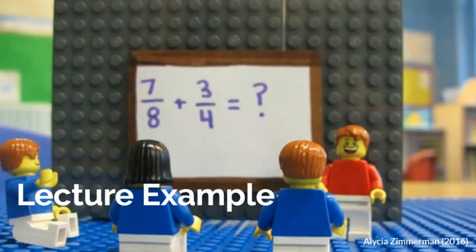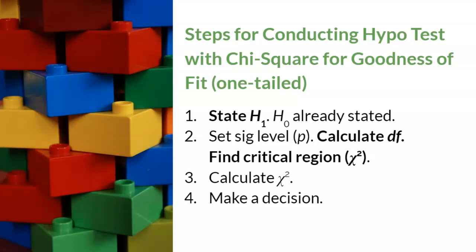Now that we have reviewed the steps of a hypothesis test with chi-square for goodness of fit, are you ready to practice your new knowledge? I have one practice example for you to review. This is a short summary of the four steps described above. Please note that these steps are for a one-tailed hypothesis test with chi-square for goodness of fit, and modifications for this test are noted in bold. Please pause the video to write down these steps on the video handout.